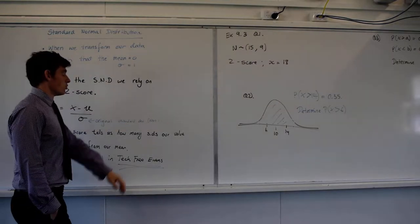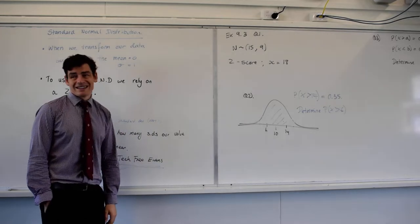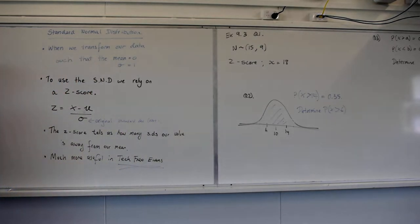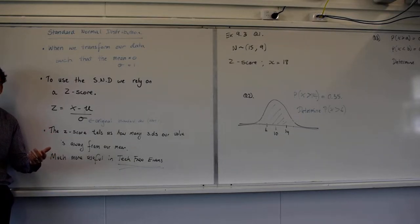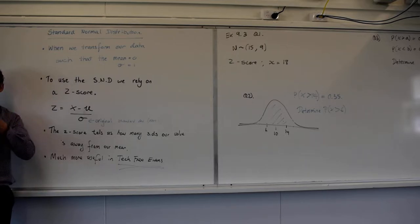So to use a standard normal distribution, which is what SND stands for, we have to use a Z score. And what a Z score does is it essentially converts our values into a standard deviation score. So where before we might have had Harry's 163 from yesterday's example, that would become negative 1.32. So that represents the standard deviations away from the mean.